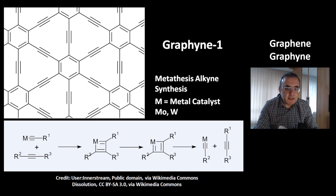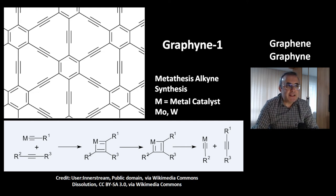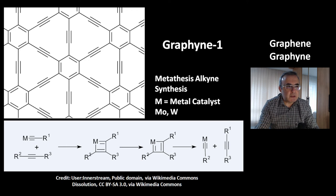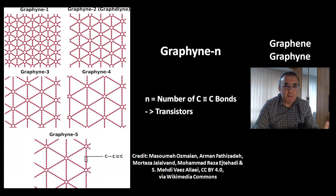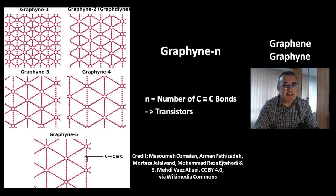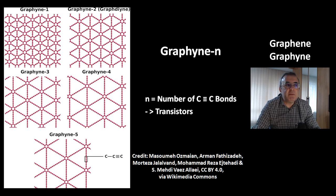If you separate the hexagons and put triple bonds in between, you get graphyne. This is a picture of graphyne-1 — another allotrope of carbon. You can use the metathesis alkyne synthesis to make these compounds, using a metal catalyst, typically molybdenum or tungsten. This reaction can go left or right, but you can force it to the right by removing the byproduct, giving you graphyne-1. You can also put more than one triple bond between the hexagons — this gives you graphyne-N, where N is the number of triple bonds. They all have slightly different properties, making them very interesting for transistors.